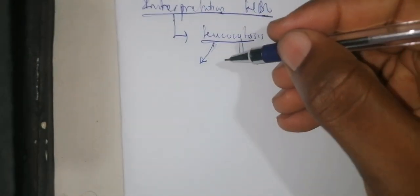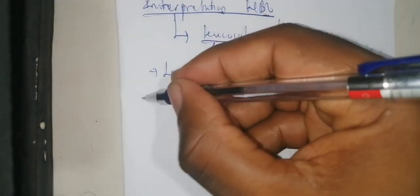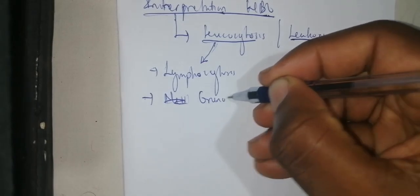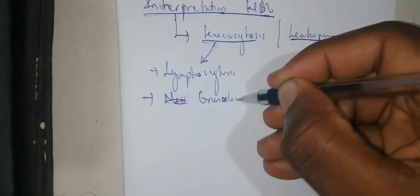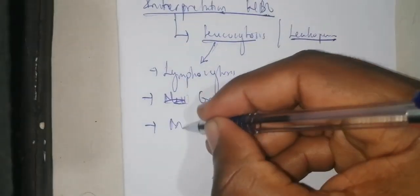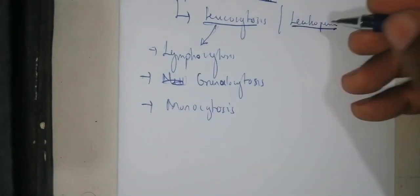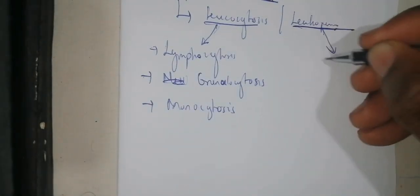If it is leukocytosis, there are different types: it can be lymphocyte predominant, which is called lymphocytosis; it can be neutrophil predominant; it can be granulocyte predominant, which is called granulocytosis; or it can be monocyte predominant, in the case of monocytosis.